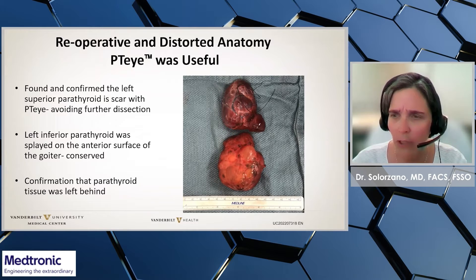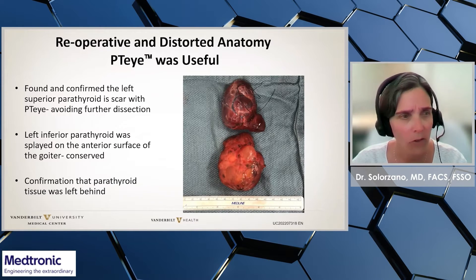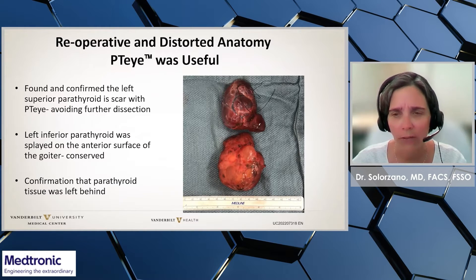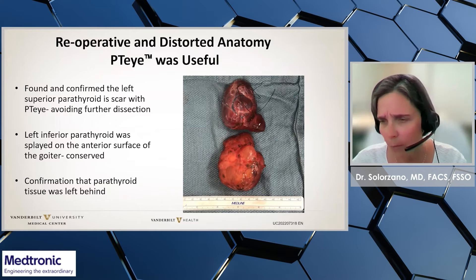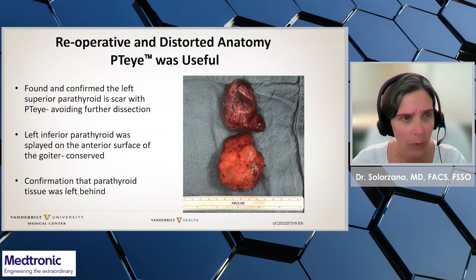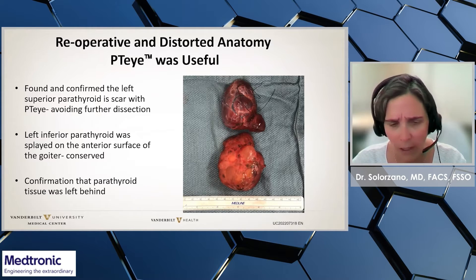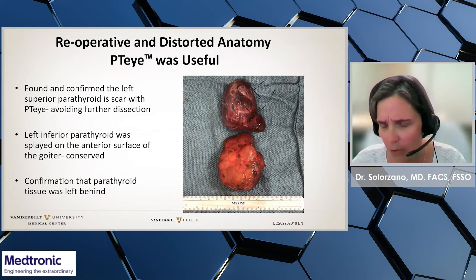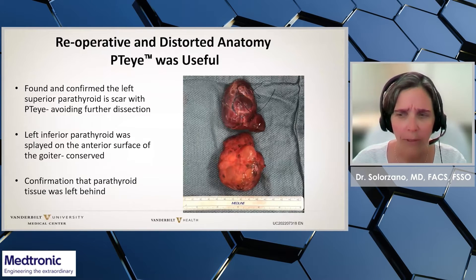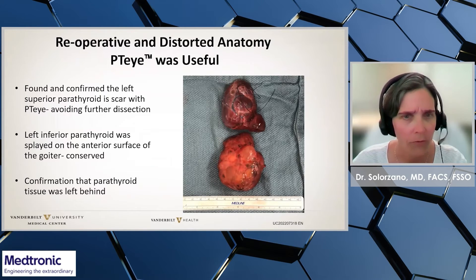With the PTI, we could confirm a left superior parathyroid gland that was embedded in scar tissue, allowing minimal dissection and progression of the case. The left inferior parathyroid gland was displayed on the surface of the thyroid and I was unsure that it was parathyroid tissue, and the PTI confirmed this, allowing me to progress and not damage the parathyroid. We could also confirm that parathyroid tissue was left in situ without the need for frozen section.